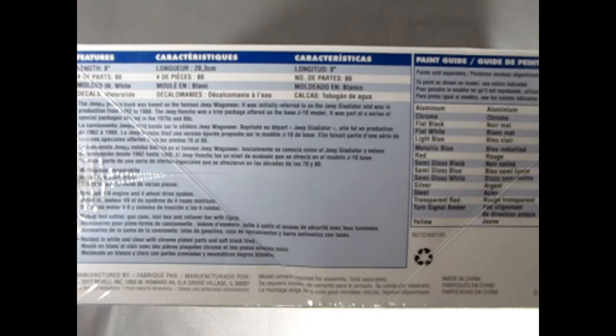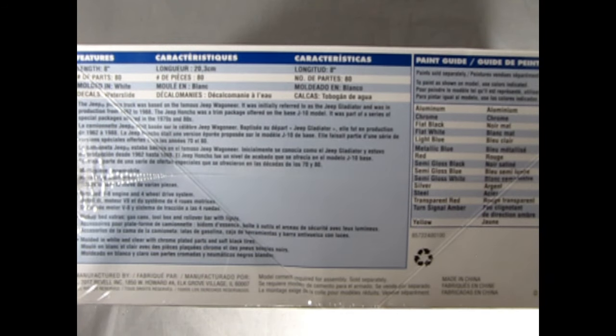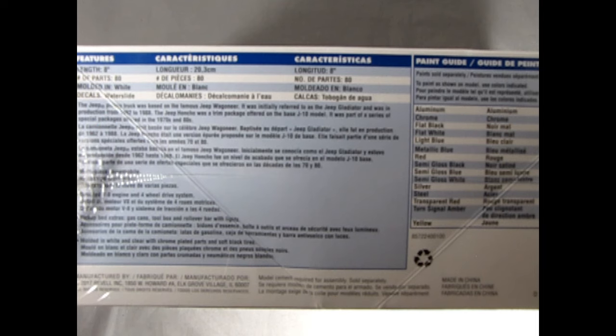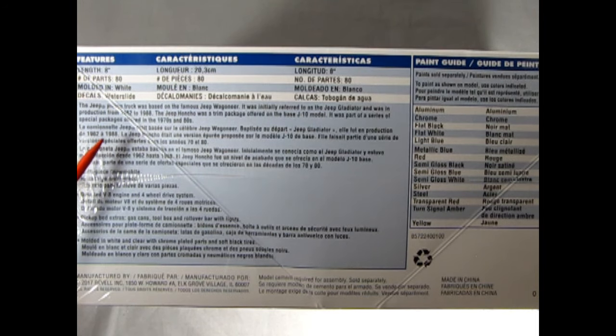On this side of the box we have the write-up. Our model kit is 8 inches long, there are 80 parts in here, molded in white with waterslide decals. The Jeep pickup was based on the famous Jeep Wagoneer. It was initially referred to as the Jeep Gladiator and was in production from 1962 to 1988. The Jeep Honcho was a trim package offered on the base J10 model.